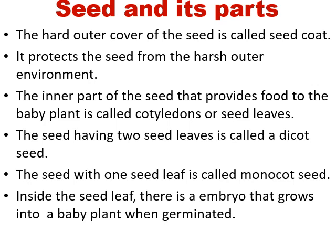The inner part of the seed that provides food to the baby plant is called cotyledon, or seed leaves. There are two new terms now: one is dicot seed and another is monocot seed. The seed with one seed leaf is called monocot seed, and the seed having two seed leaves is called dicot seed.